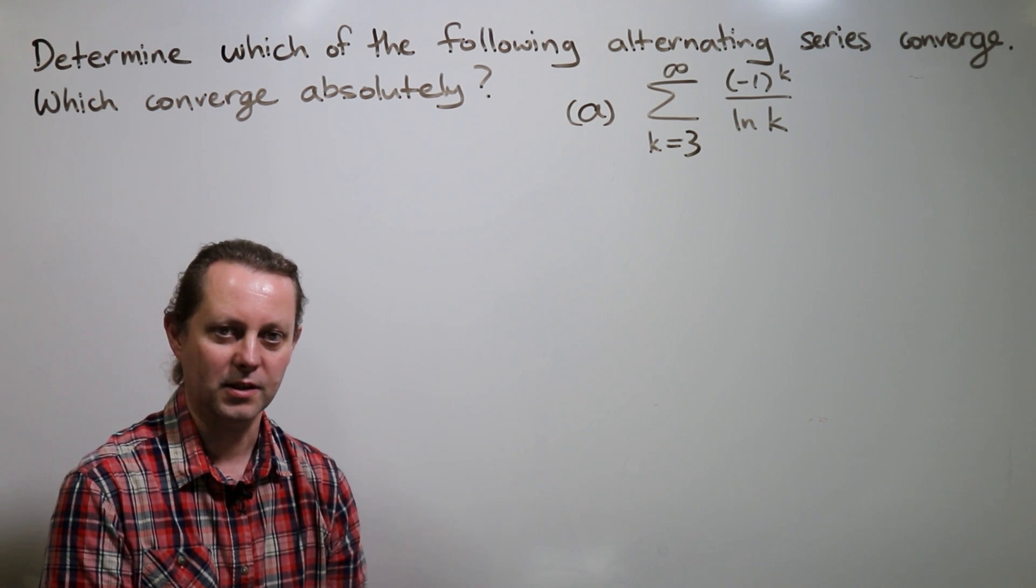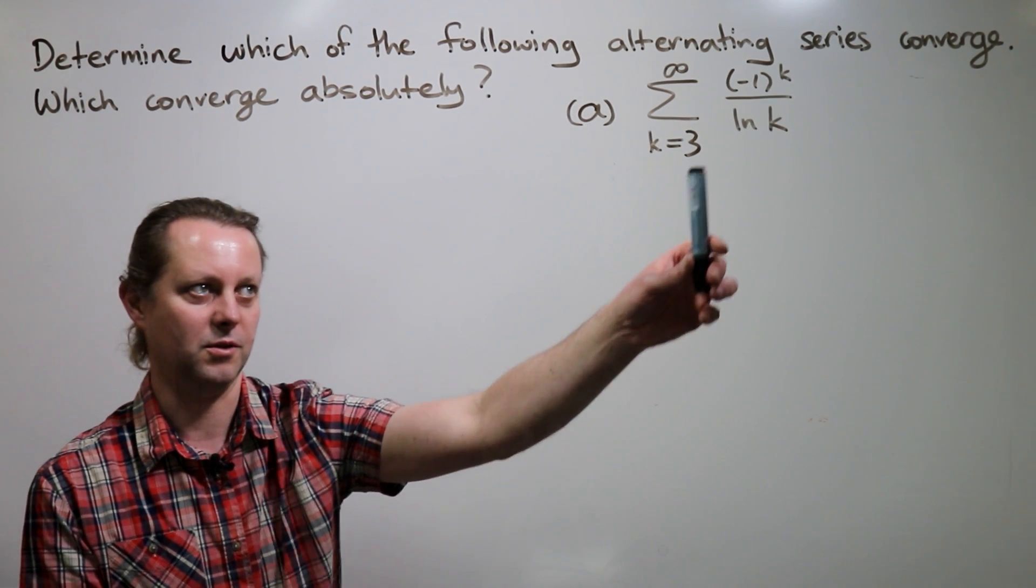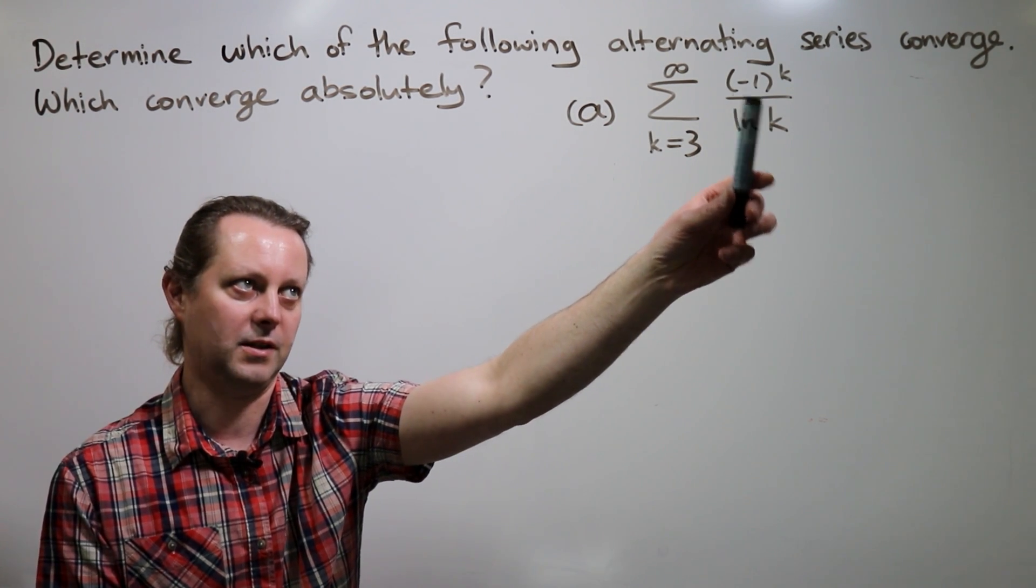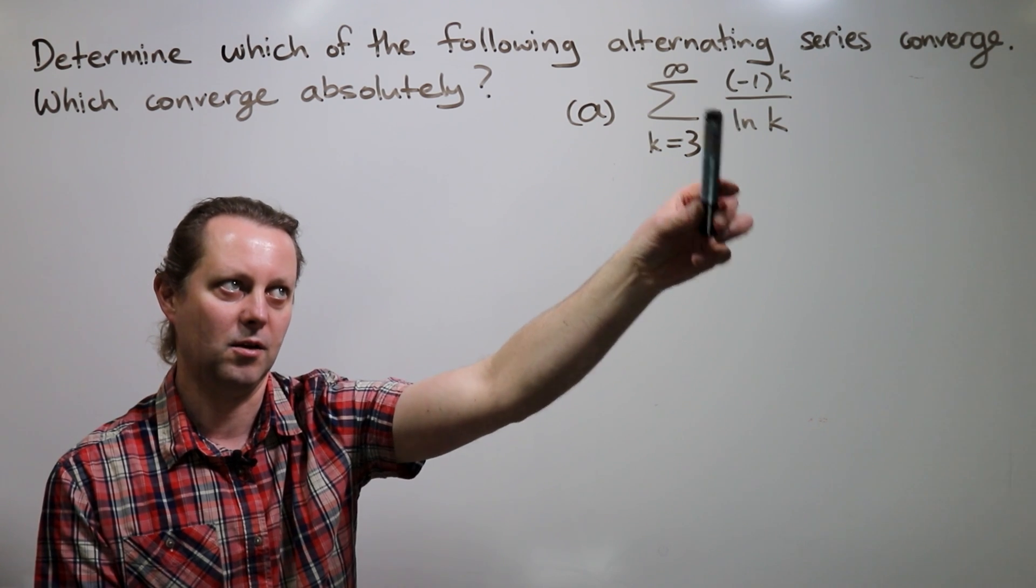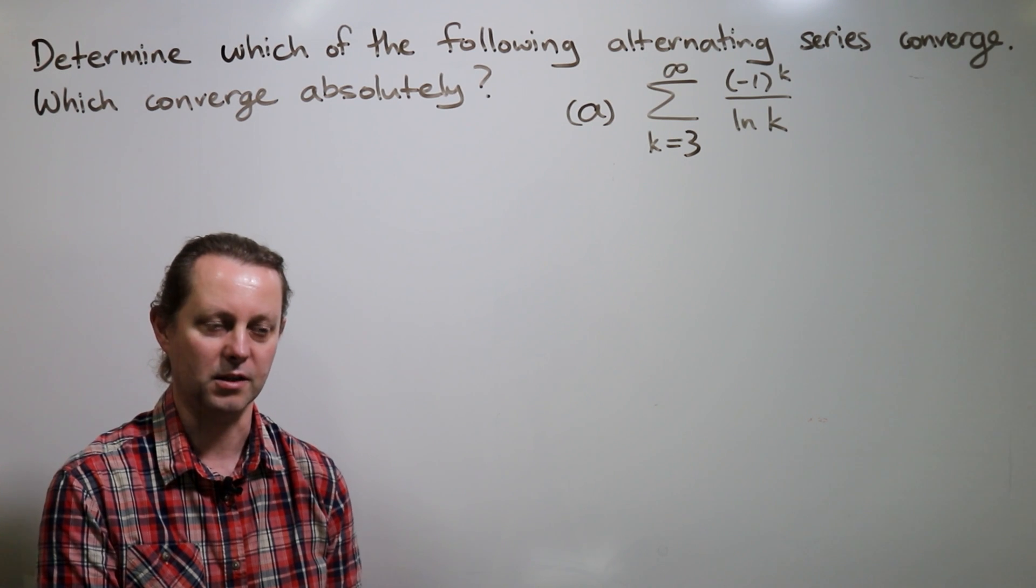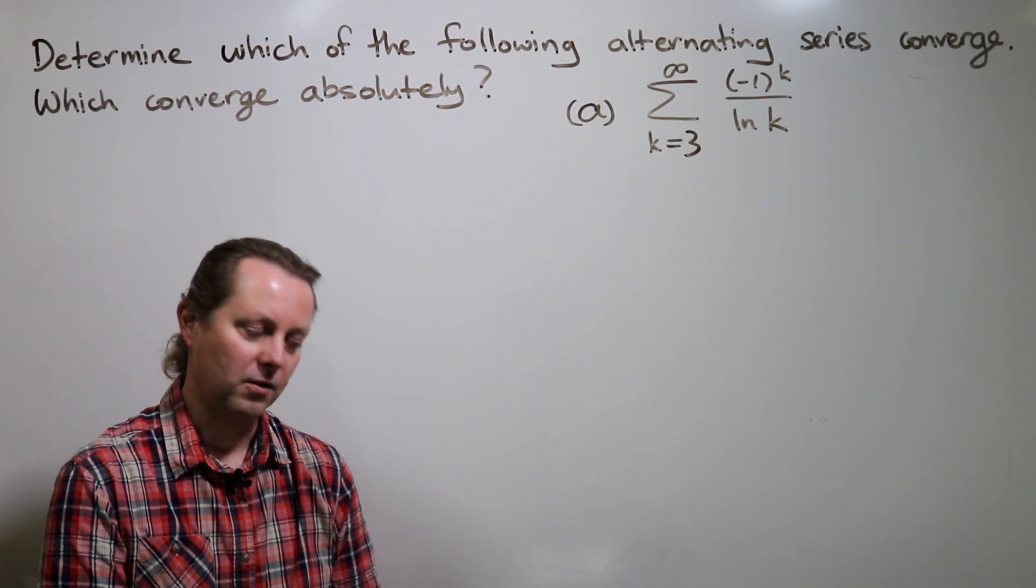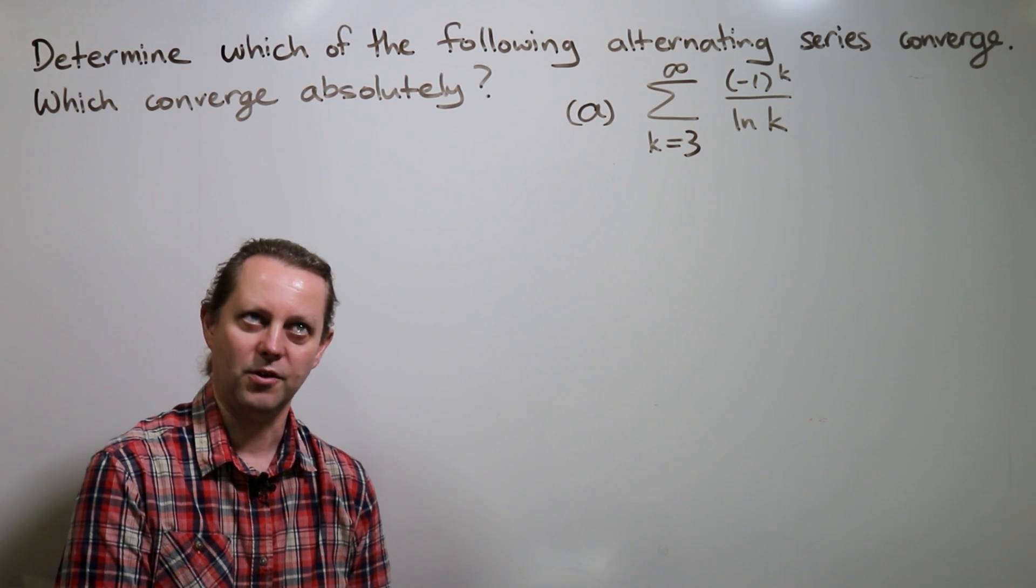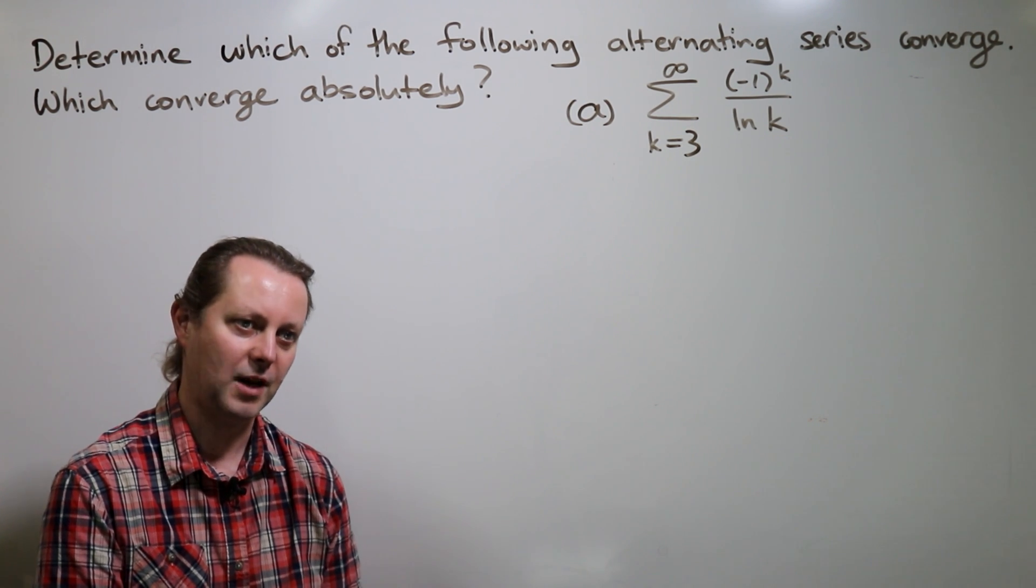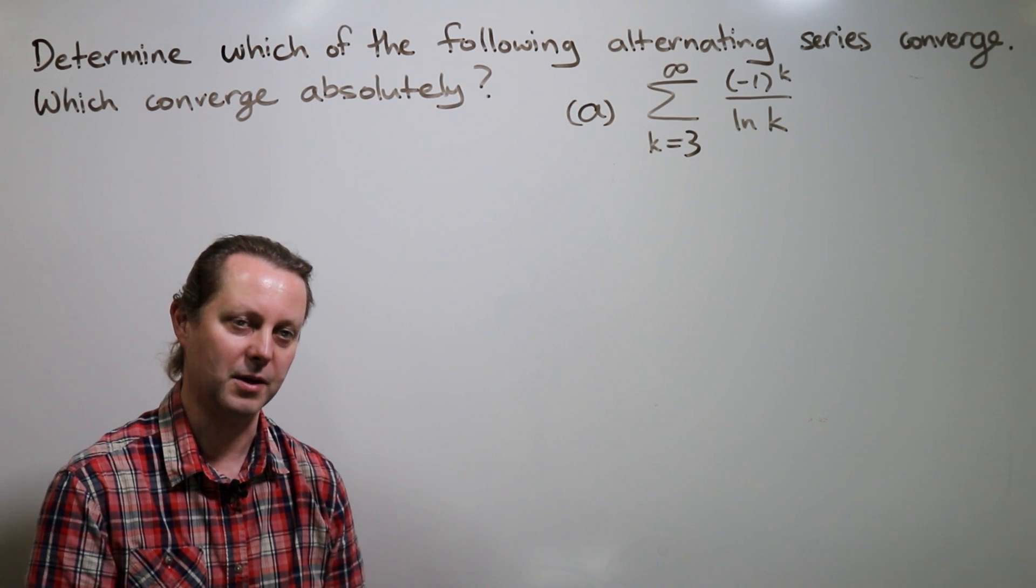We're already told that this series is alternating, but you can see if you wanted to check this yourself, it's minus one to the k multiplied by a positive function, one over ln k. So this is an alternating series. We'd like to know whether or not it converges. The question also asks us to determine whether it converges absolutely, and if it converges absolutely, then it converges. So we might be best to check that first.